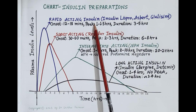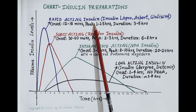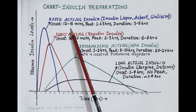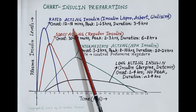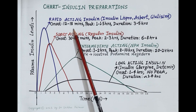These insulin preparations control post-prandial rise in blood glucose levels. Because their onset is very rapid, they are usually administered three times daily immediately before or after breakfast, lunch, and dinner.